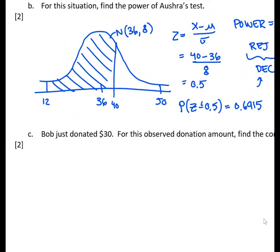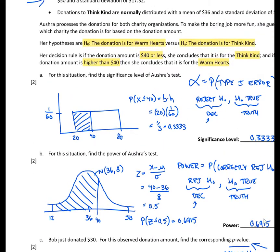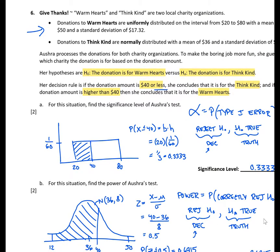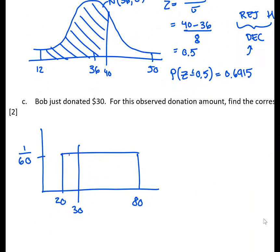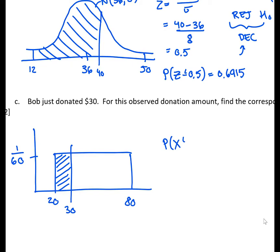Just as in Part A, we draw out the null distribution — uniform from 20 to 80 with height 1 over 60. Bob's donation is $30. To find the p-value, we want the probability of $30 or something more extreme in the direction of the alternative hypothesis, which is $40 or less. Calculating that probability as base times height: base is 10 and height is 1 over 60, giving a p-value of 0.1667.